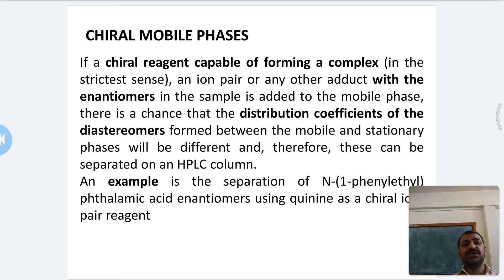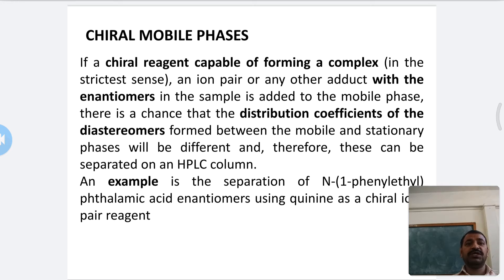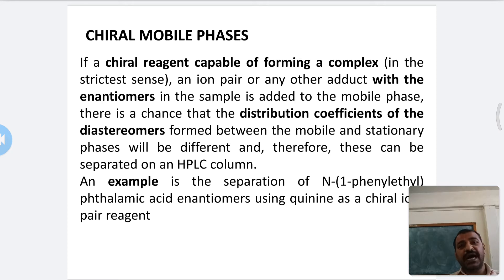The distribution coefficient of the diastereomers formed between the mobile and stationary phase will be different. Therefore, these can be easily separated on HPLC in the column. The chiral mobile phase forms a complex with enantiomers, converting them to diastereomers with different distribution coefficients and different velocities in the column, allowing separation by HPLC.